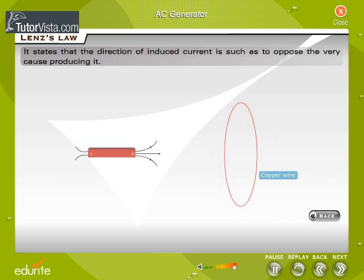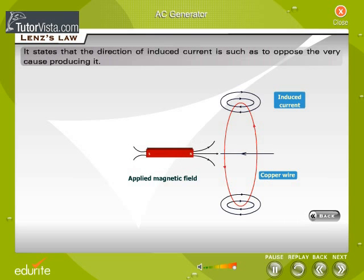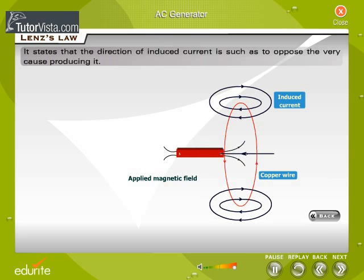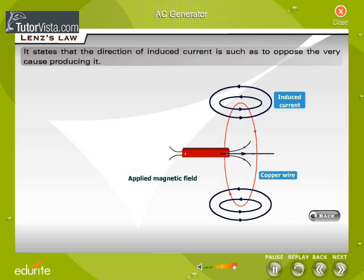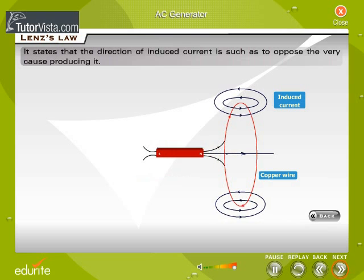Lenz's Law states that the direction of induced current is such as to oppose the very cause producing it.